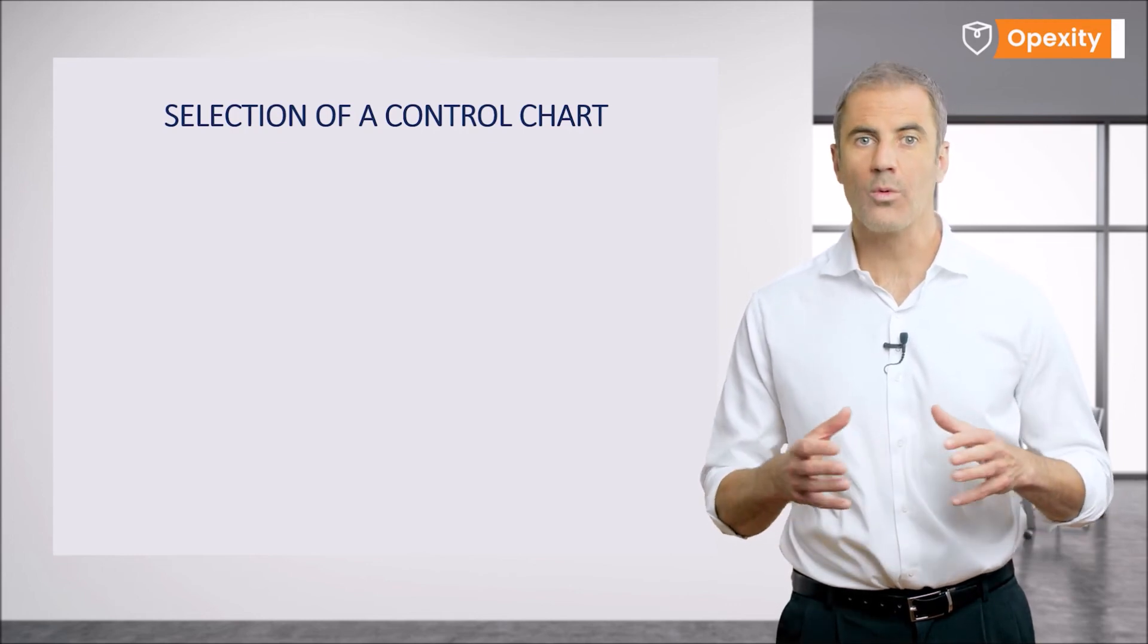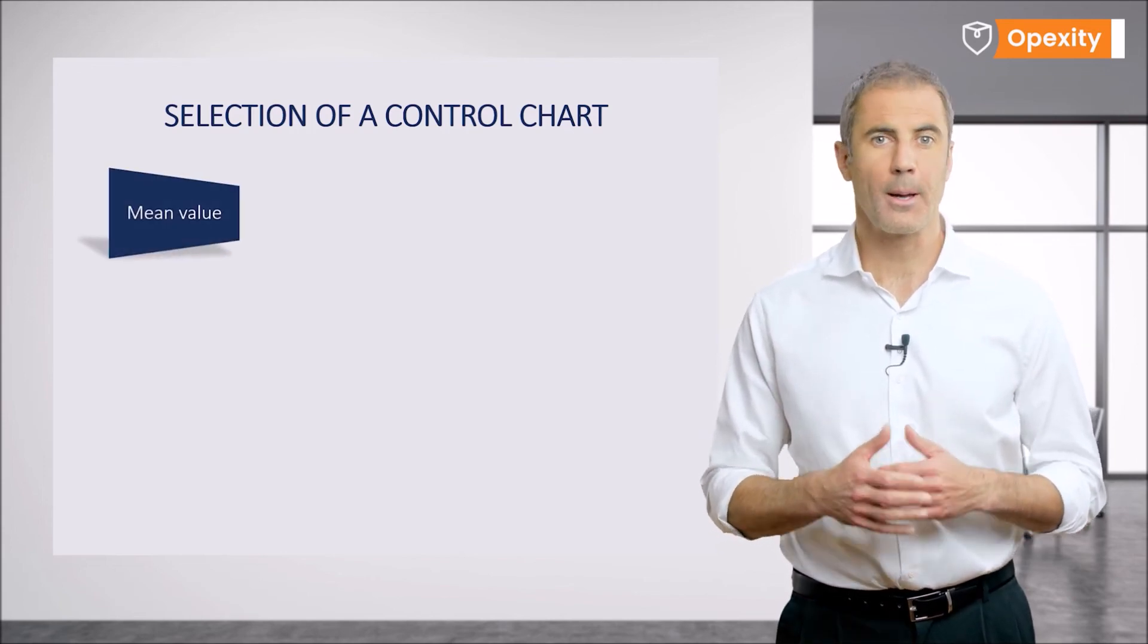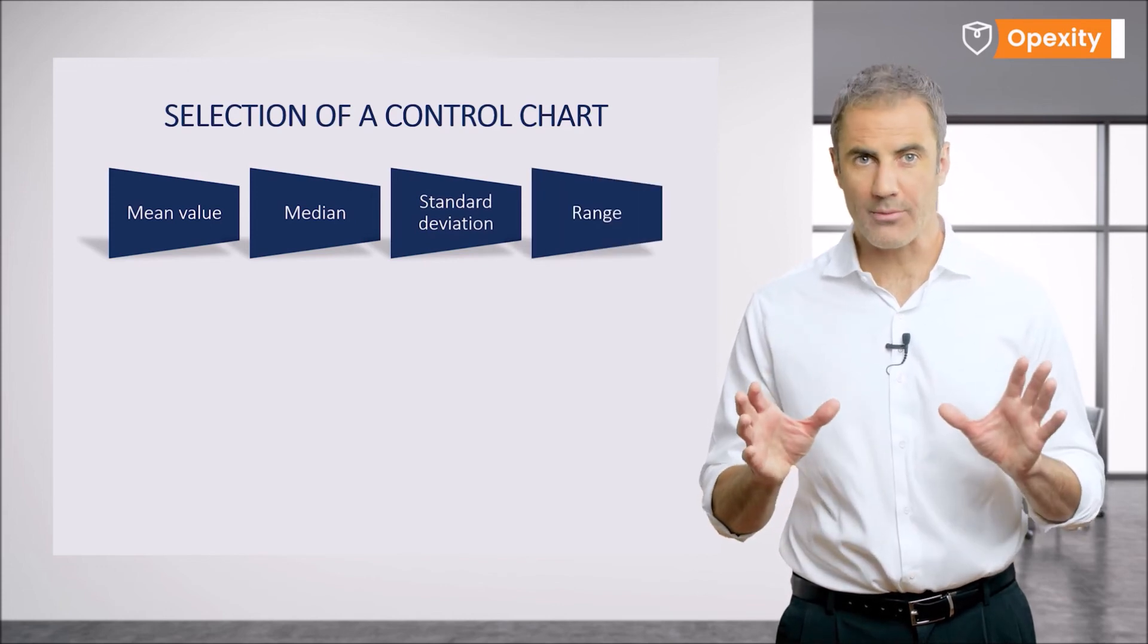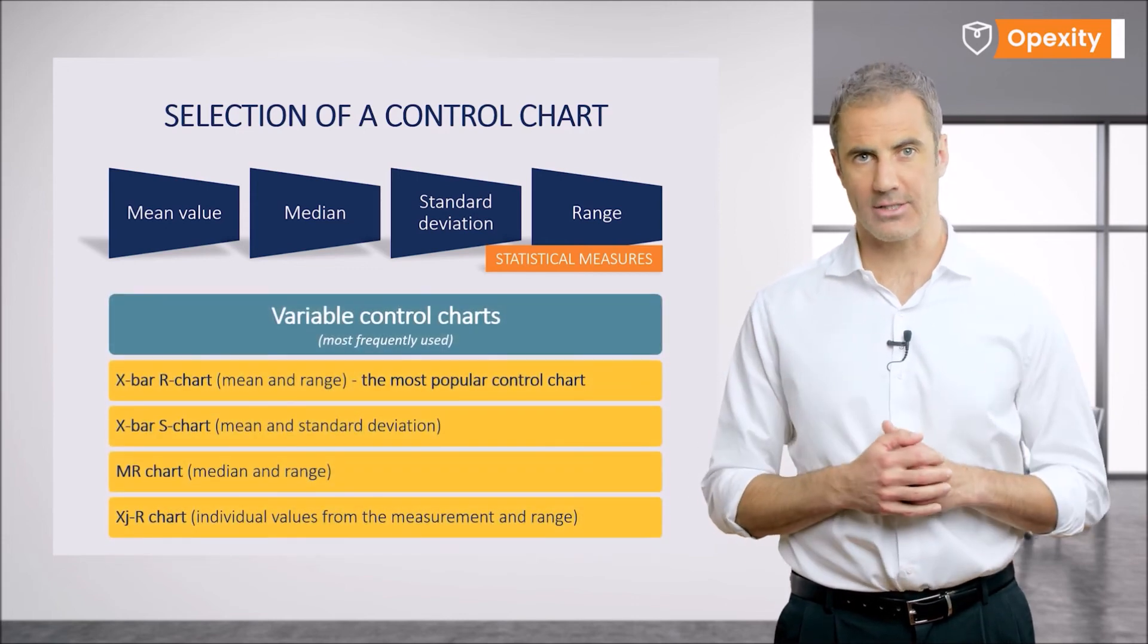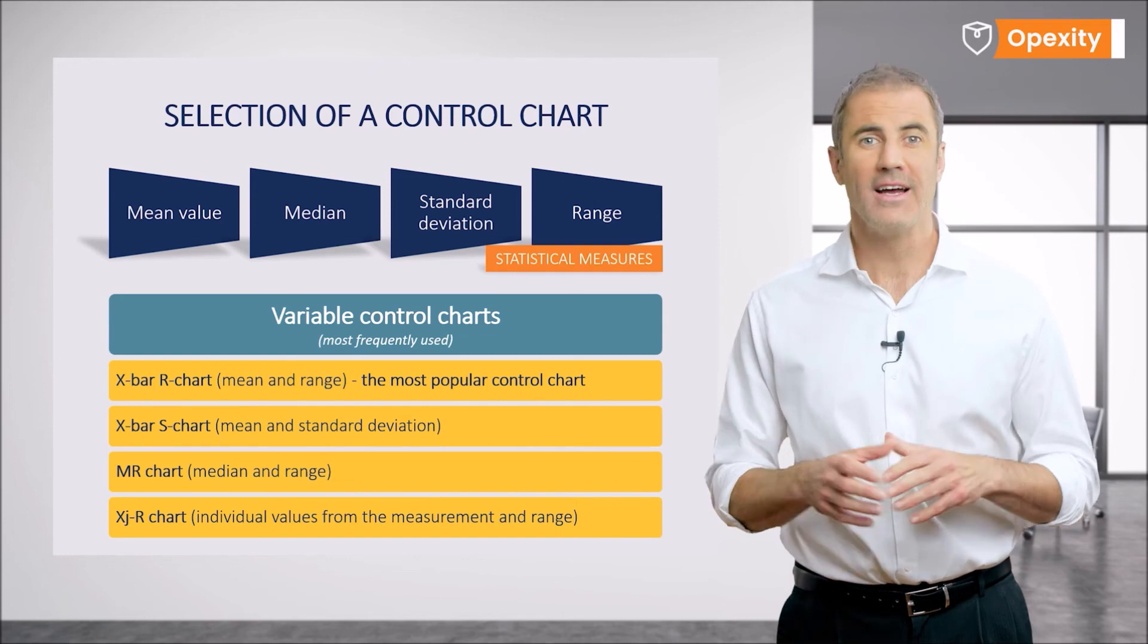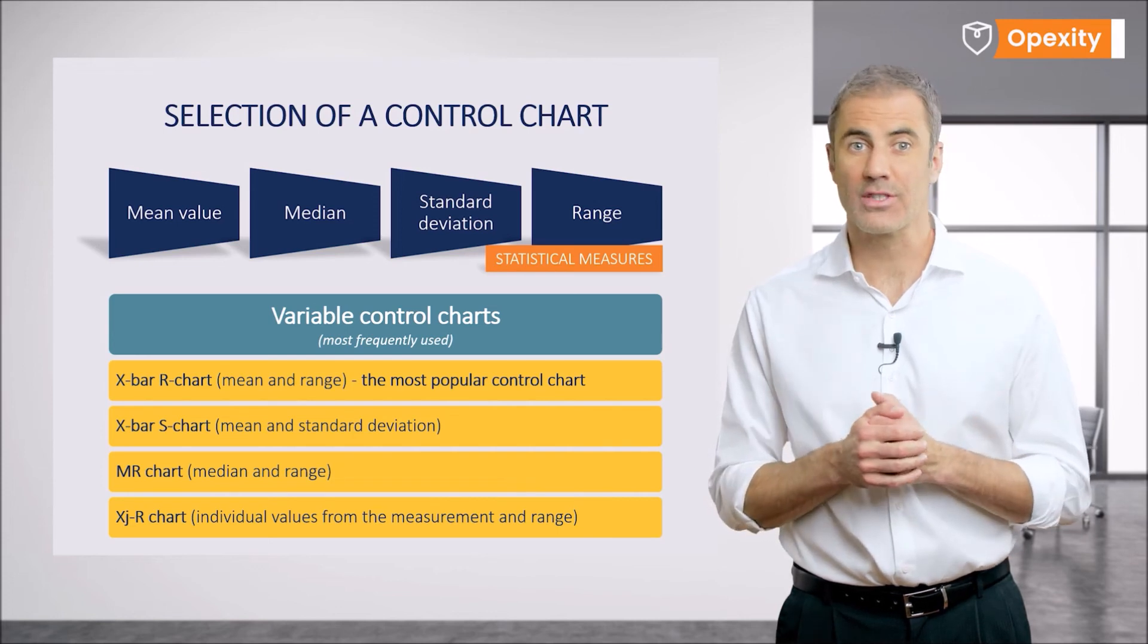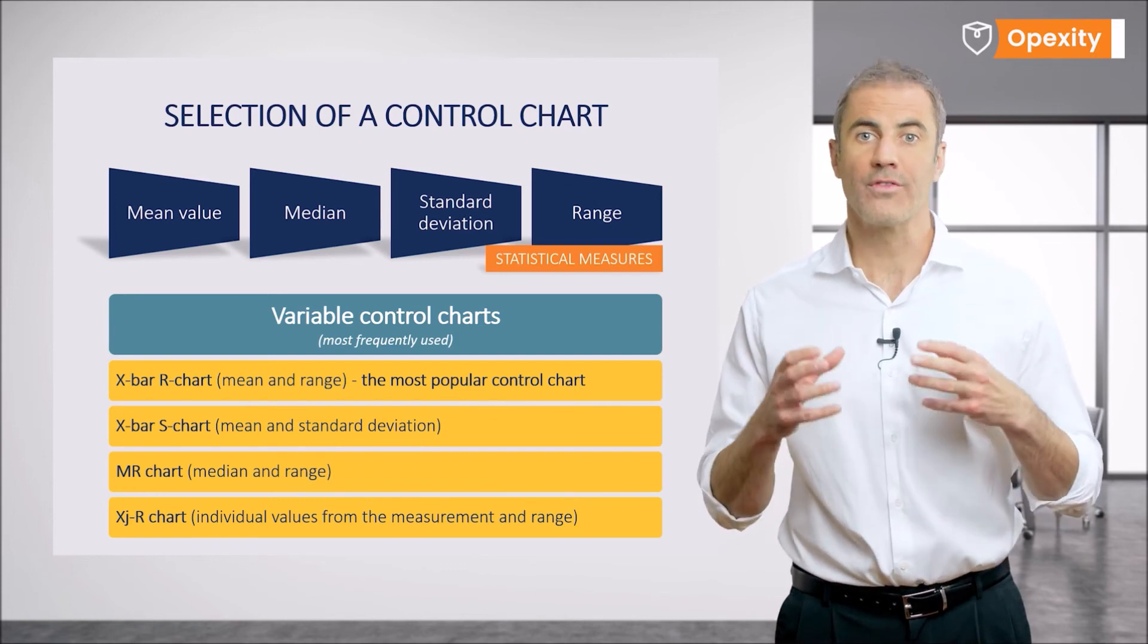In the case of variable control charts, we will use known statistical measures. These include mean value, median, standard deviation, and range. It's worth remembering that variable control charts do not have just one measure, but are constructed from two indicators. The most popular control chart is X bar R chart. The occurrence of two measures is due to the possibility of an error in the mean, which will not be visible on the X bar, but will be visible on the R chart. An example is the measurement of the weight of an item, where very different pieces can, on average, give a result close to the target. Only the gap between the individual weight measurements shows that there is something wrong with the sample taken.